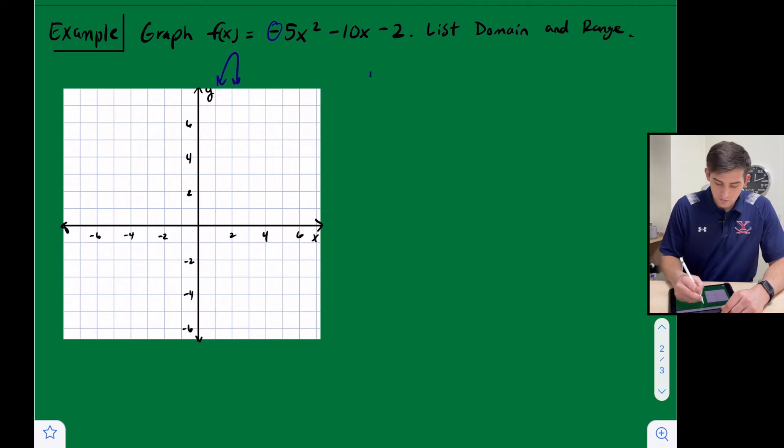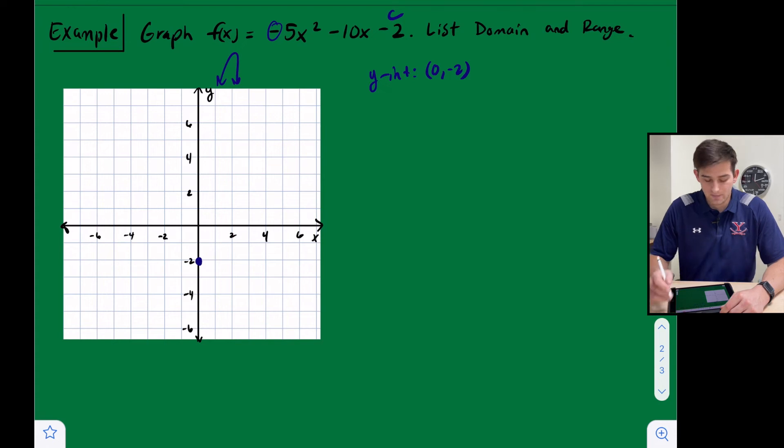So now let's go ahead and plot our y-intercept. So we know that is zero comma negative 2, because negative 2 is c. So there's our y-intercept.